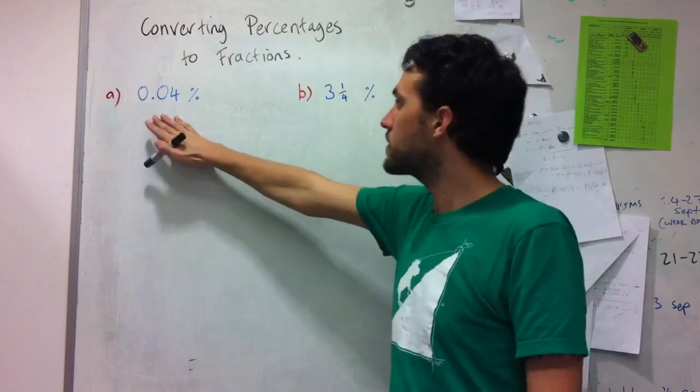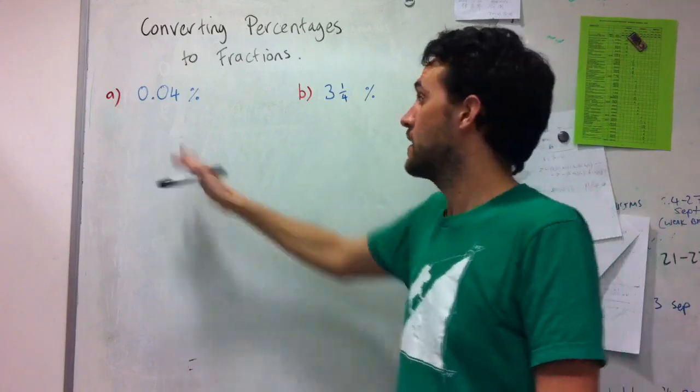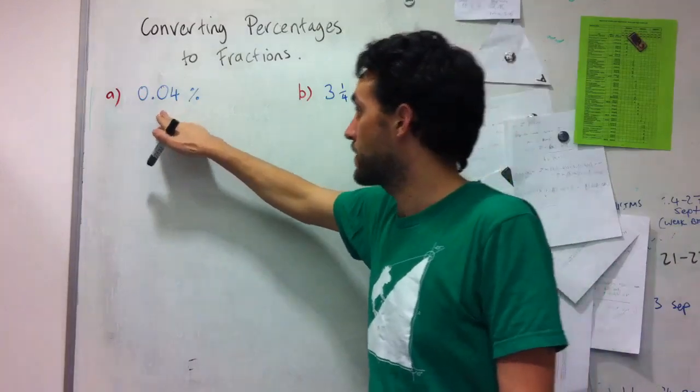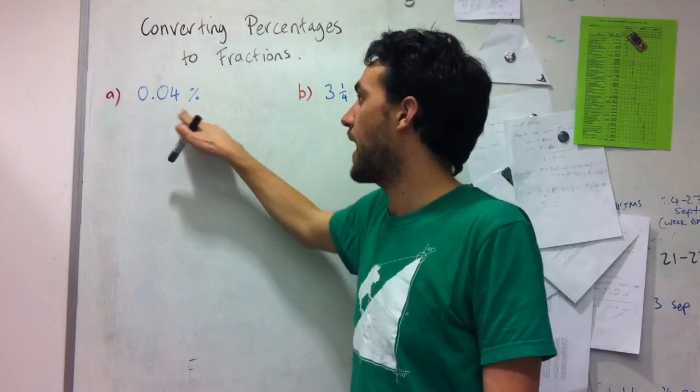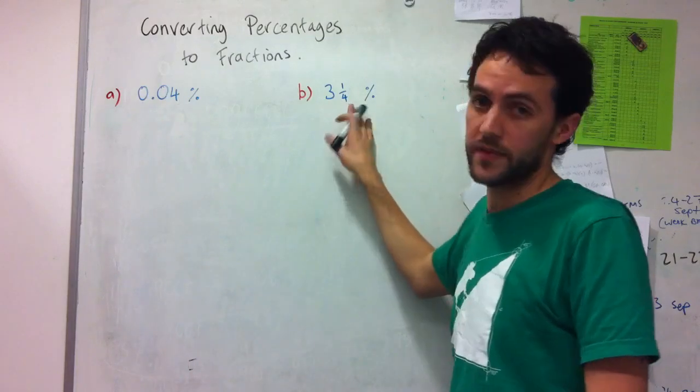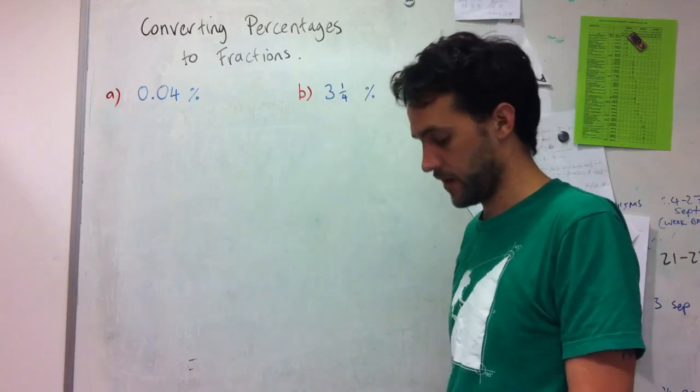So you'll see both of these percentages have fractional bits. Here we've got four hundredths of a percent, so we've got the fractional part in decimal form. And here we've got three and a quarter percent, a mixed number with both three and the quarter of the fraction.